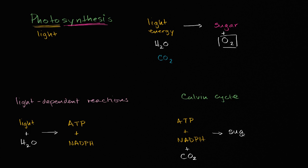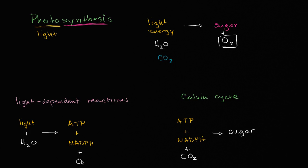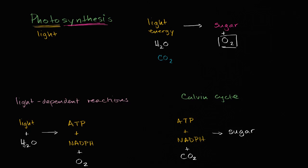I'm missing one of the byproducts of the light-dependent reactions — a very important one: molecular oxygen. So to recap, the light-dependent reactions use energy from photons in light along with electrons from water to store energy as ATP and NADPH, with molecular oxygen as a byproduct. In order to produce one molecule of molecular oxygen, you're going to need two water molecules. Then in the Calvin cycle, we take the ATP and NADPH along with carbon dioxide to store energy as actual sugar.